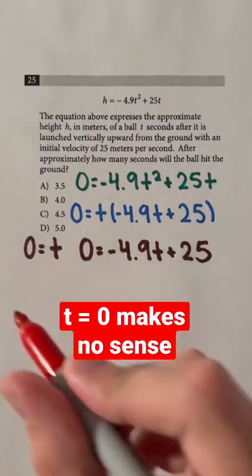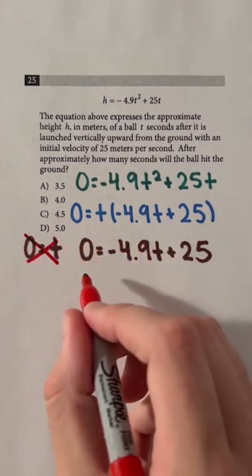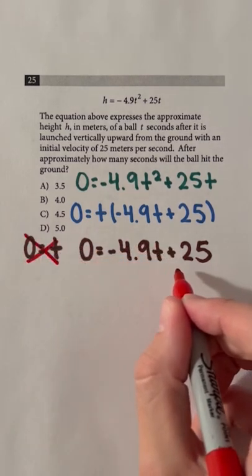t equals 0 makes no sense since it means that the ball hasn't been launched yet, so you must solve for t in 0 equals negative 4.9t plus 25.